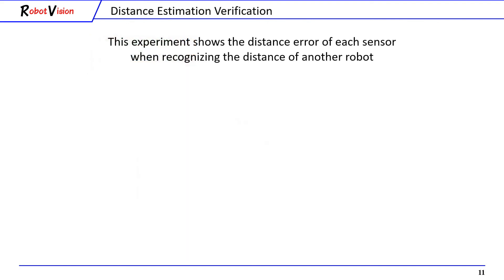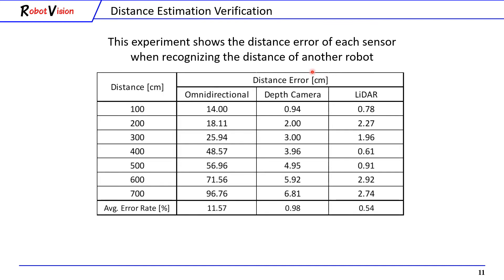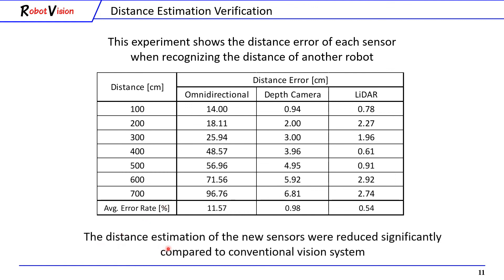To compare the accuracy of each sensor, we conducted a distance estimation verification experiment. This experiment shows the distance error of each sensor in recognizing the distance of another robot. The table shows the result when the target was placed from 1 meter to 7 meters. From this result, the distance estimation error of the new sensors was reduced significantly — more than 10 times — compared to the conventional vision system.